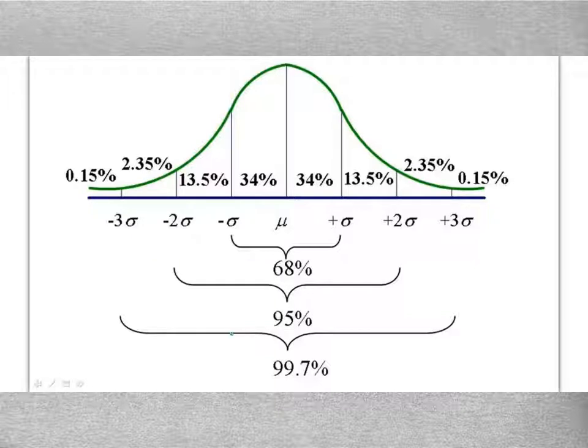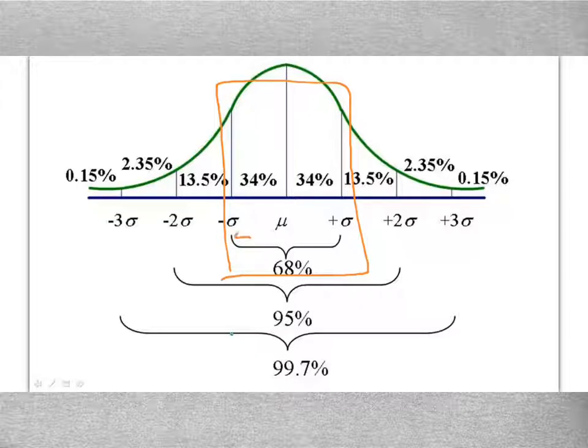And so they first ask us for the middle 68%. Well, I can see that that middle 68% of a normal distribution is going to represent the scores that are both one standard deviation below and one standard deviation above the mean.